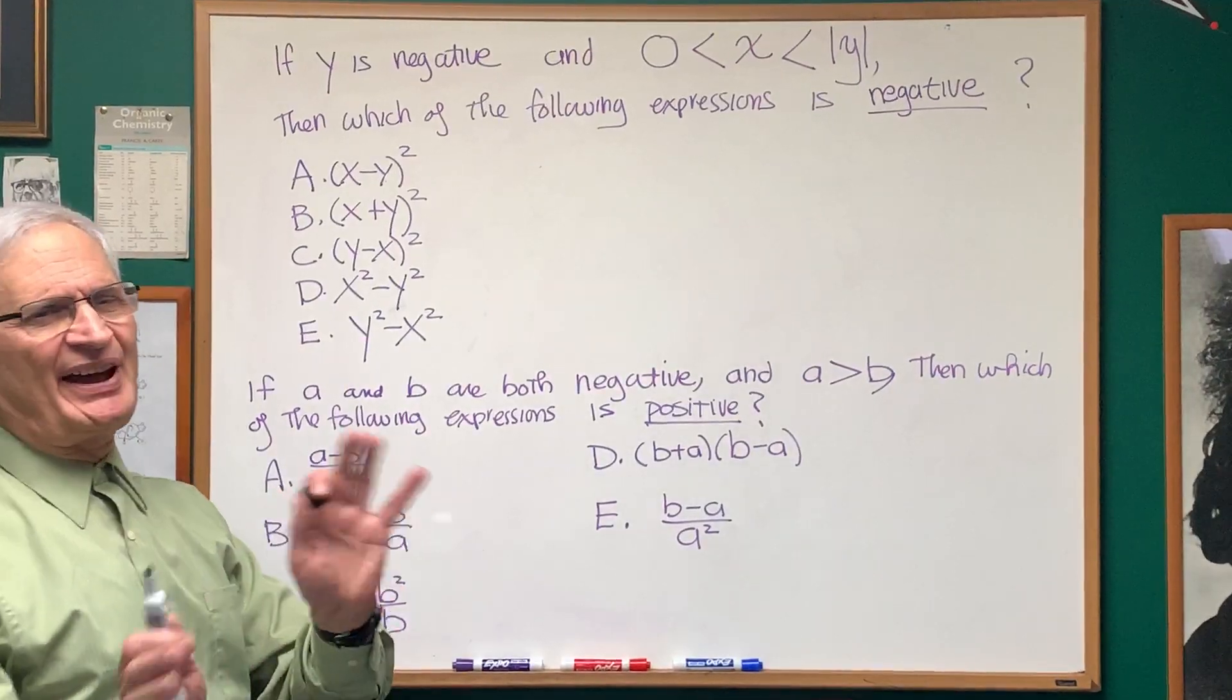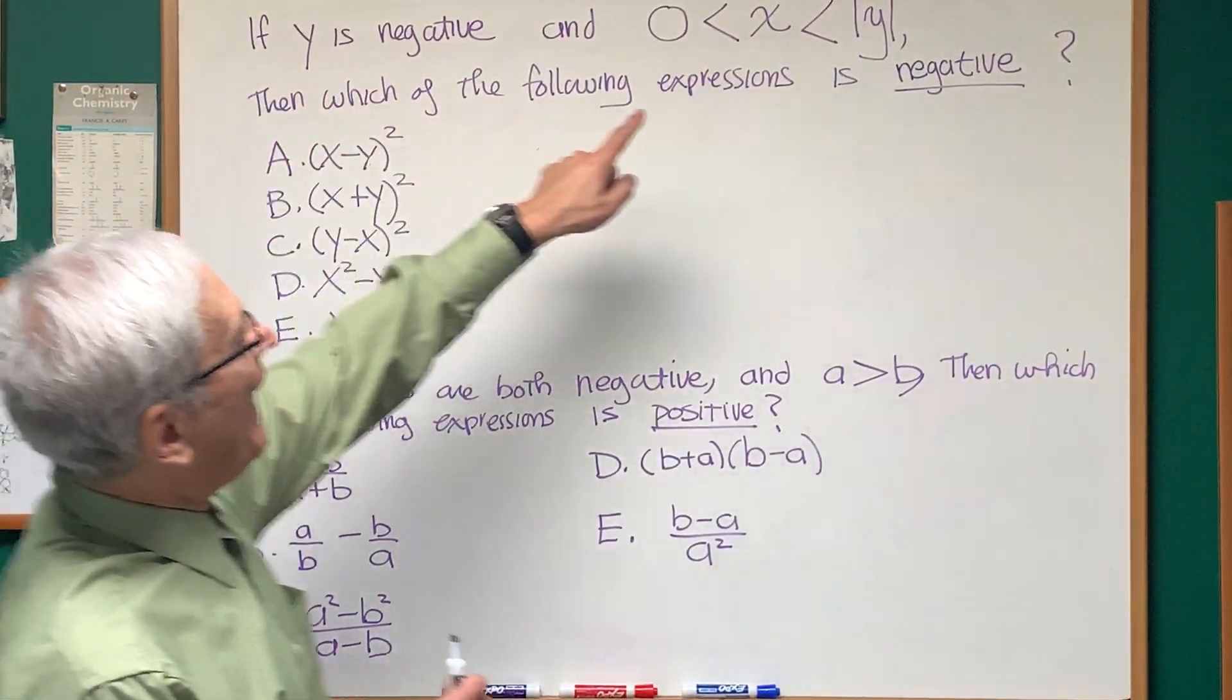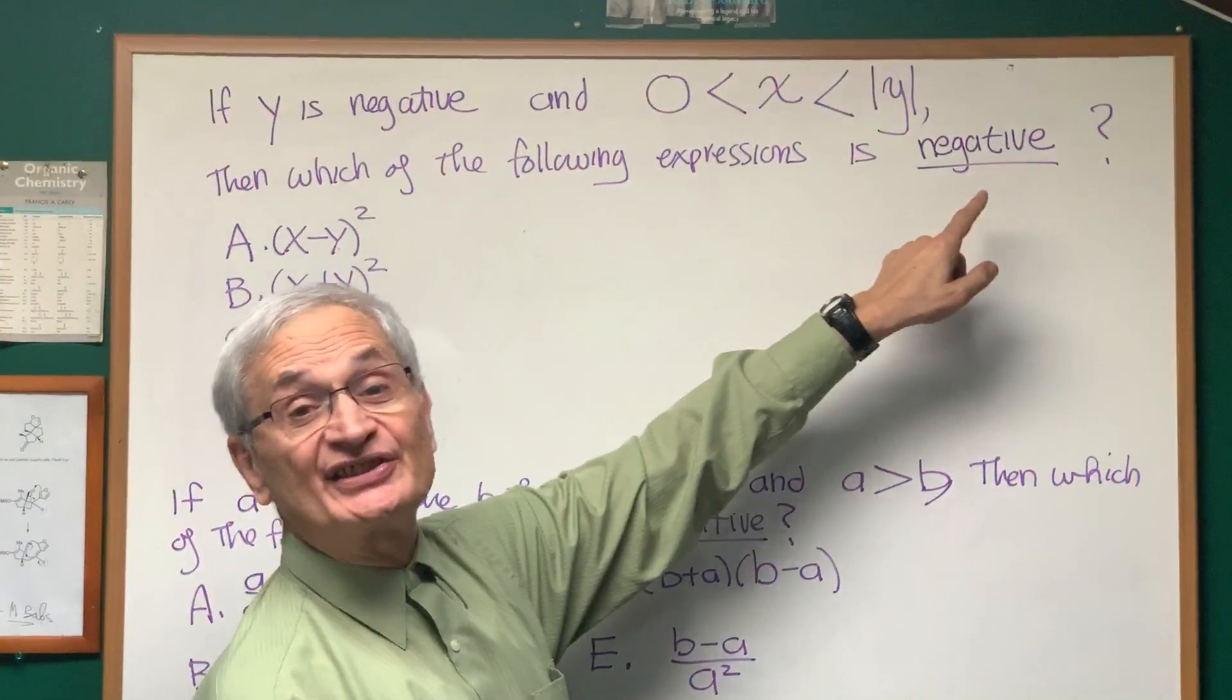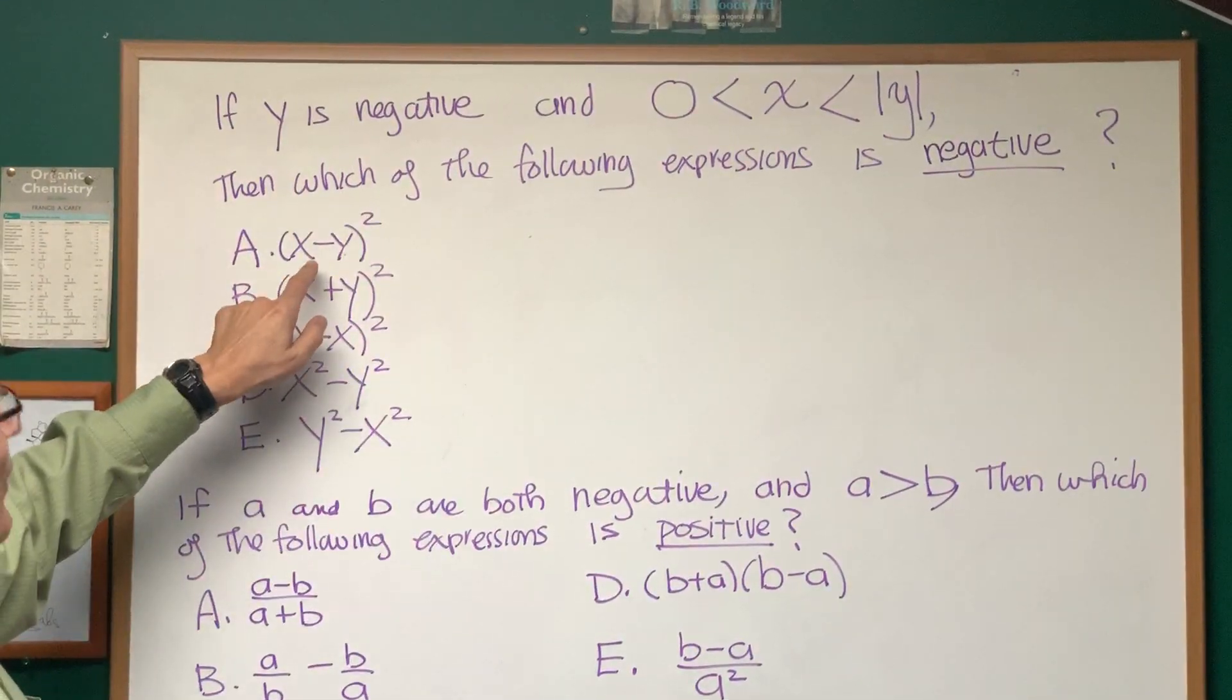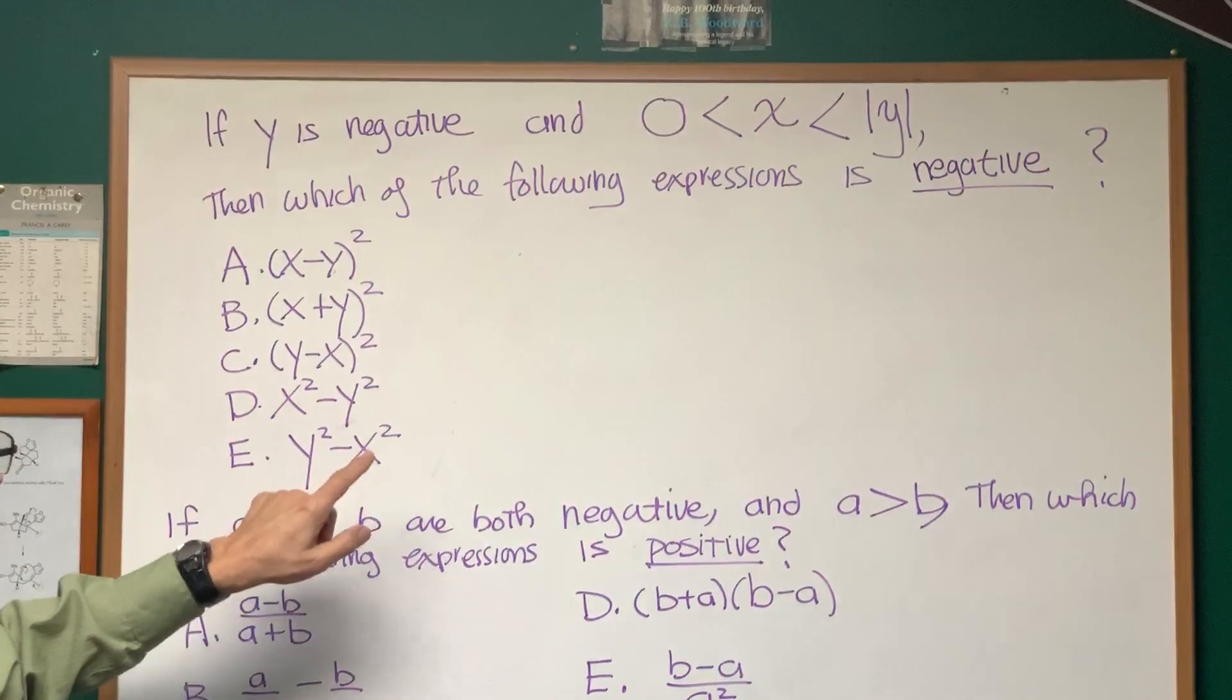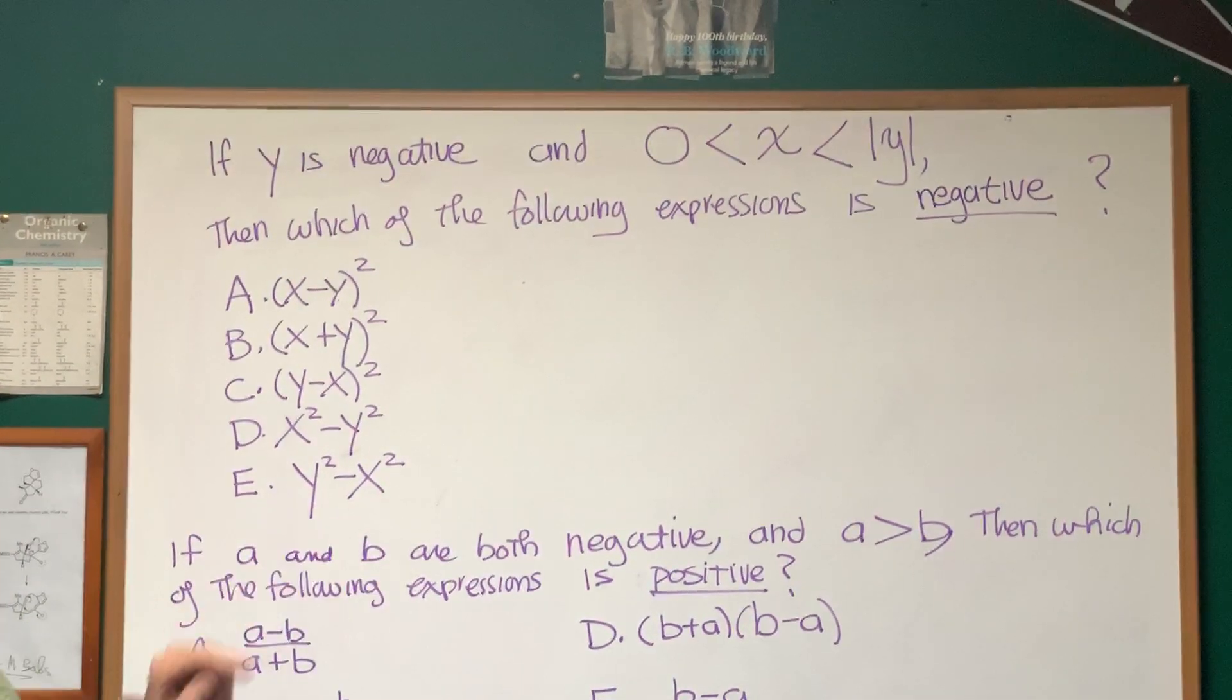Okay, we're going to compare quantities here. If y is negative and x is between zero and the absolute value of y, then which of the following expressions is negative? And we have the following expressions to choose from: (x-y)², (x+y)², (y-x)², x²-y², and y²-x².